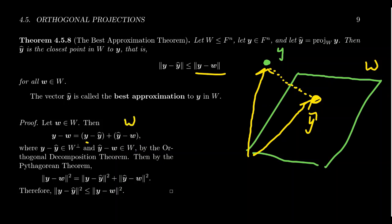On the other hand, we've already seen previously that y minus its orthogonal projection onto W is itself orthogonal to vectors in W. This is something that belongs to W-perp, as we've seen. So this is the orthogonal decomposition of y minus w. In particular, these vectors are perpendicular with each other.